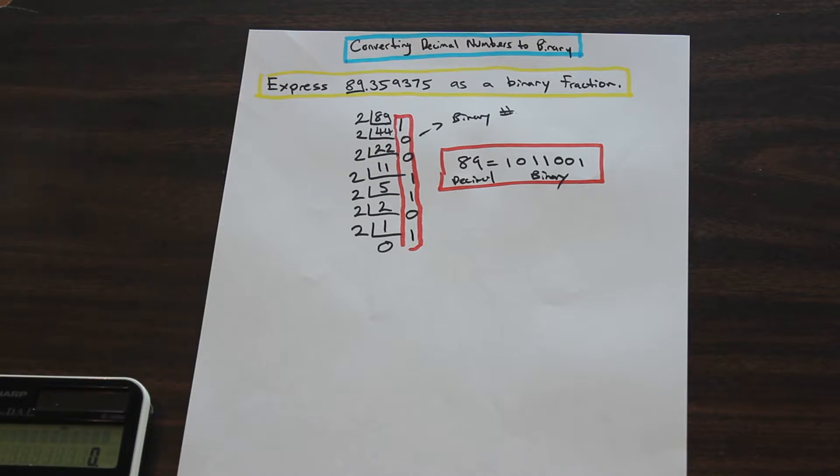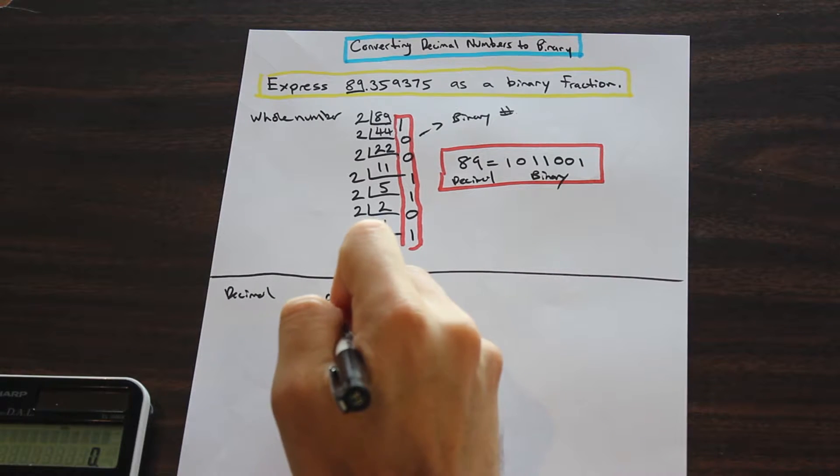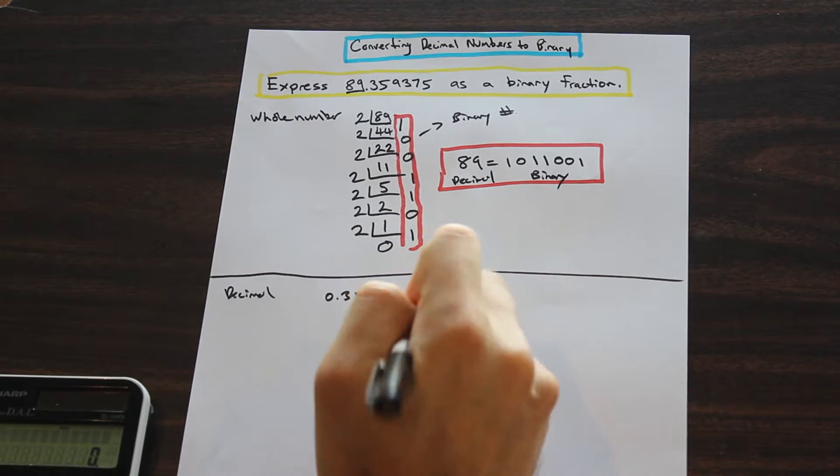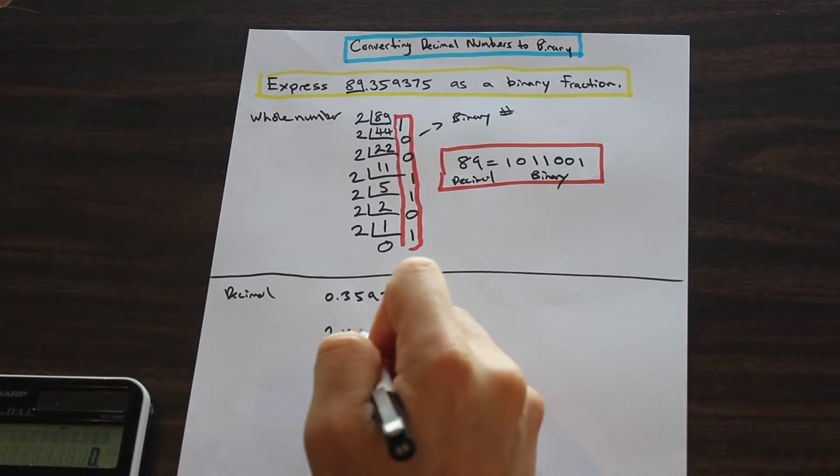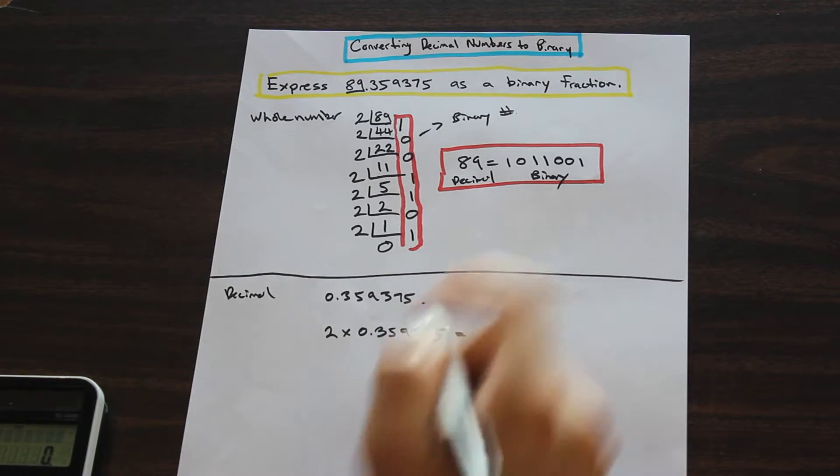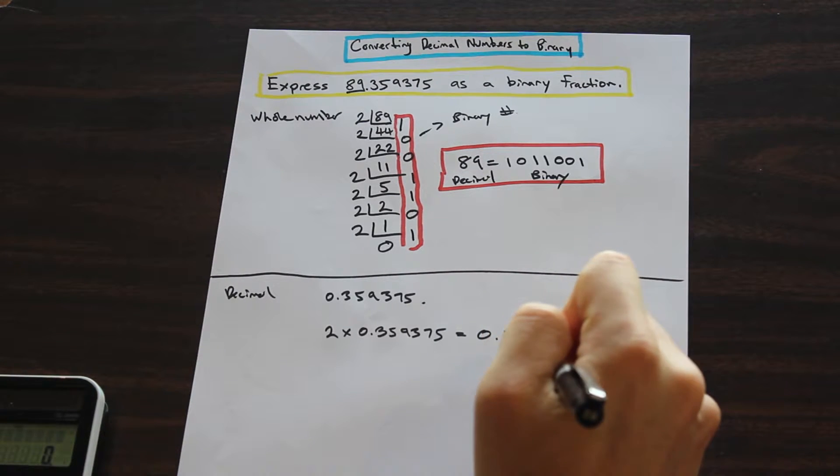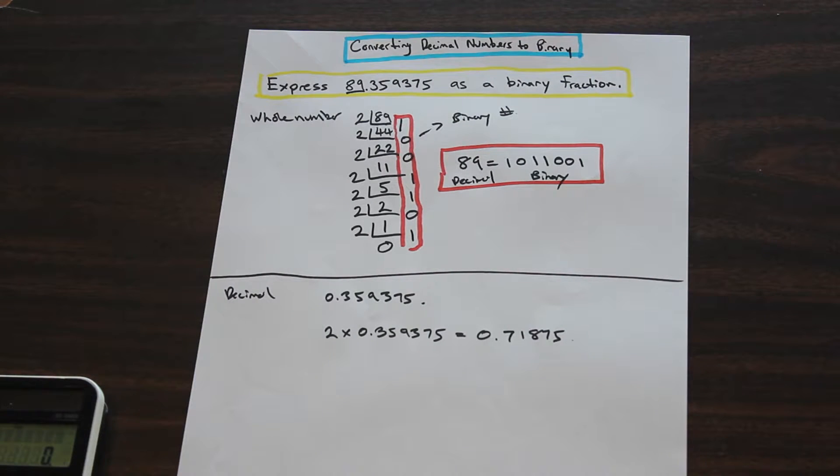We have to do the right side of the decimal number that we're given. And that's a little bit different of a process, but it's actually fairly straightforward. So we have our decimal of 0.359375. How do we convert this to a binary number? Simple. We just multiply this number by 2. We're going to say 2 times 0.359375, and that is equal to 0.71875. So we're going to reserve this number here.